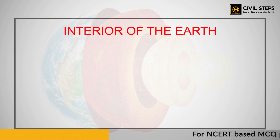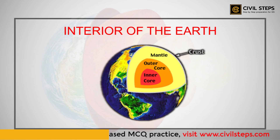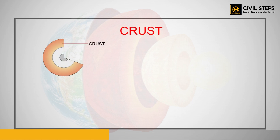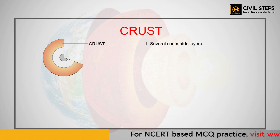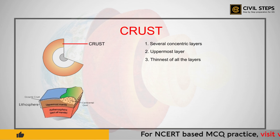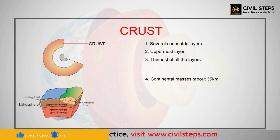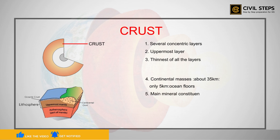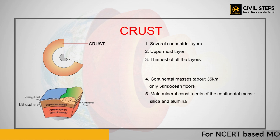The interior of the Earth is made up of several concentric layers, one inside the other. The uppermost layer over the Earth's surface is called the crust. It is the thinnest of all the layers — about 35 kilometers thick on the continental masses, whereas it is just five kilometers on the ocean floors.